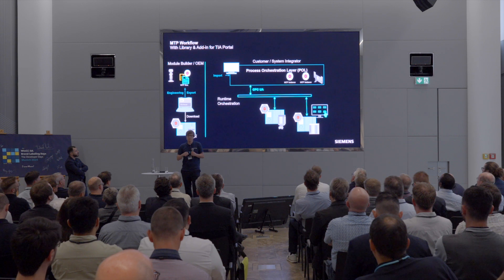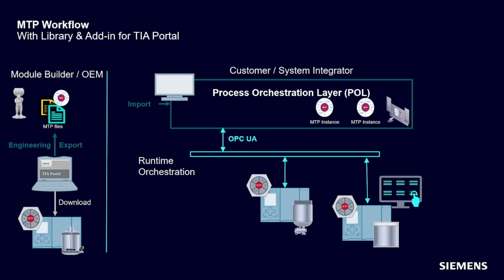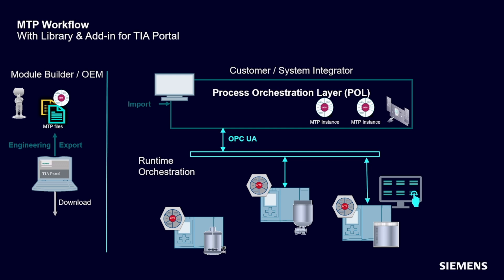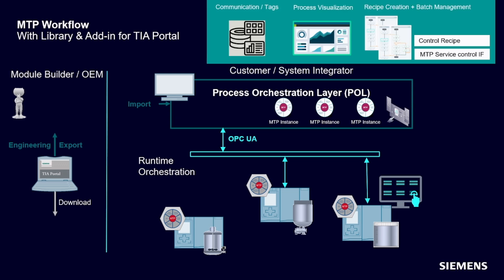What happens then? On the right-hand side we have the process orchestration layer — a SCADA system, DCS system, or MES system. The machine builders ship the machine to the plant and share the MTP file with the system integrator. Now the magic happens: with a few clicks, the SCADA system automatically generates the connection to the machine, the tags, the visualization, as well as the link to the batch and recipe system. You plug the machine to the network and are directly able to monitor and control it in the SCADA or DCS system.